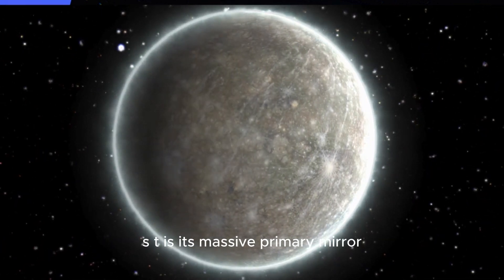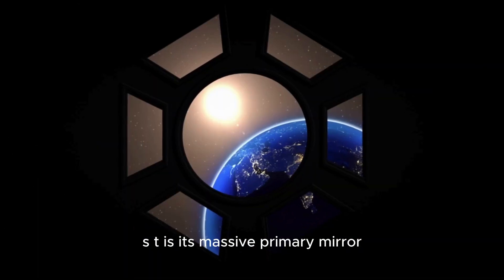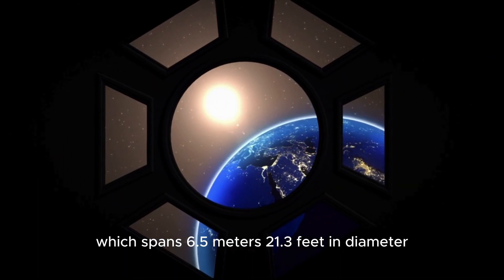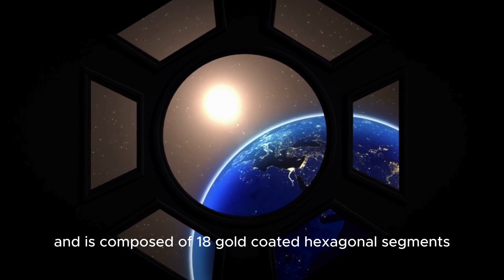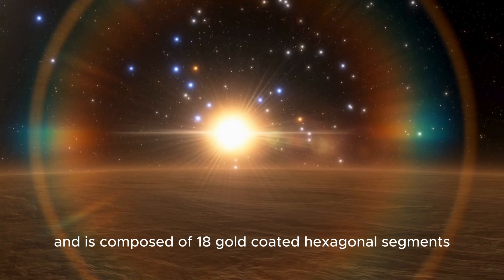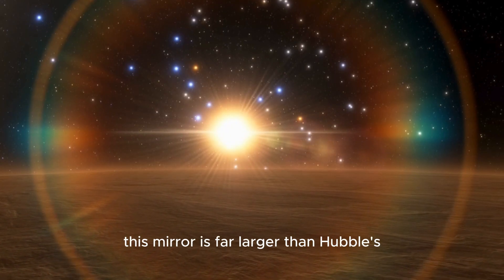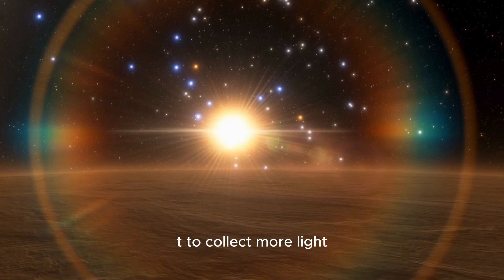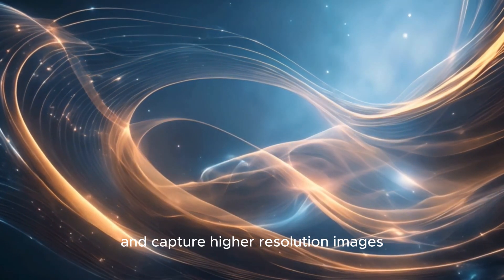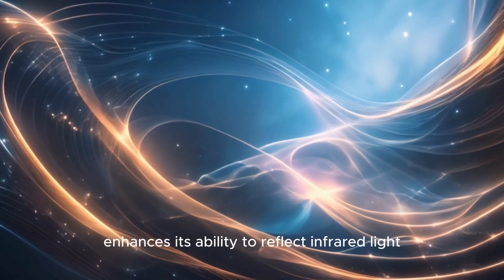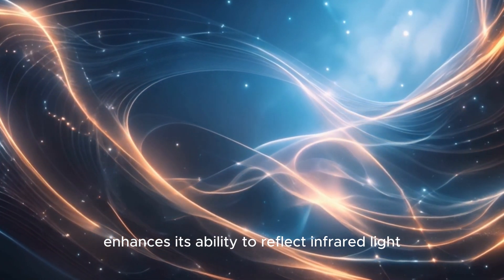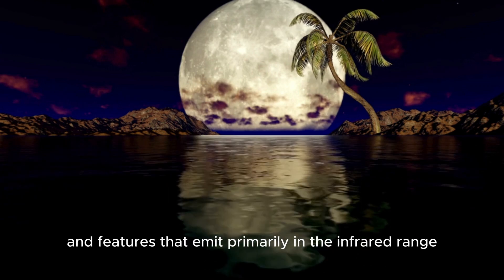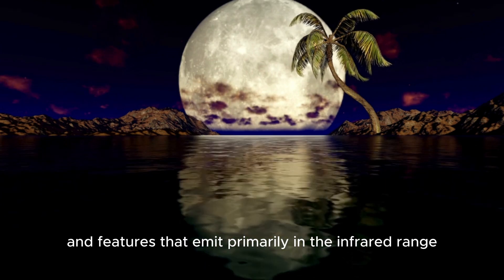At the heart of the JWST is its massive primary mirror, which spans 6.5 meters (21.3 feet) in diameter and is composed of 18 gold-coated hexagonal segments. This mirror is far larger than Hubble's, enabling the JWST to collect more light and capture higher resolution images. The gold coating enhances its ability to reflect infrared light, which is crucial for observing distant objects.